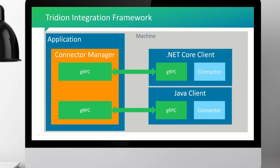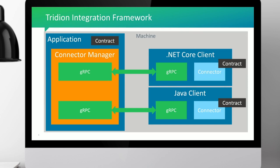gRPC gives us the flexibility to talk to another process in another language — we can even talk to processes running .NET Core, Java clients, or Node.js. It is flexible because it's based on a contract. The contract is defined by the application and must also be implemented in the connector. That way, we can communicate from the application to the client, and it looks like the application is directly talking to the connector. We hide all the technical details — you only have to implement the connector, register it, and it will automatically be consumed by the application.